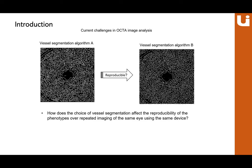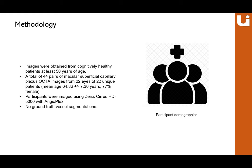For methodology, images were obtained from cognitively healthy patients aged 50 years and above, provided by Duke University. We used 44 pairs of macular superficial capillary plexus images, chosen for their improved visualization of microvasculature compared to the deep retinal plexus. Patients had multiple OCTA images obtained from one or both eyes on the same day for baseline and repeat imaging, using the Zeiss Cirrus HD-5000 with AngioPlex. There were no ground truth vessel segmentations, and image quality was verified by a trained grader.